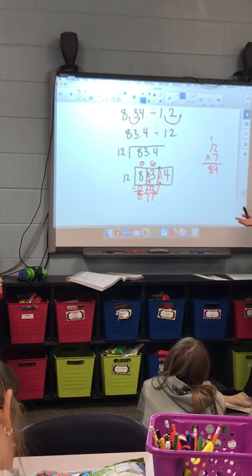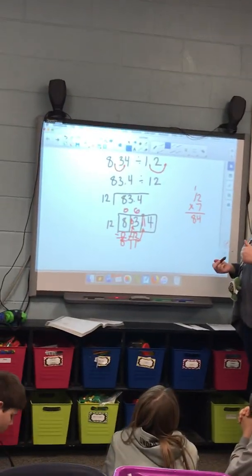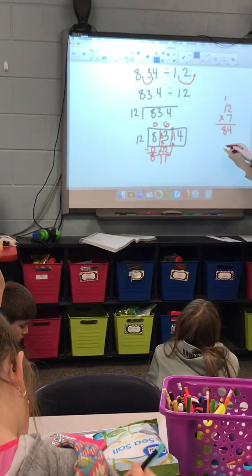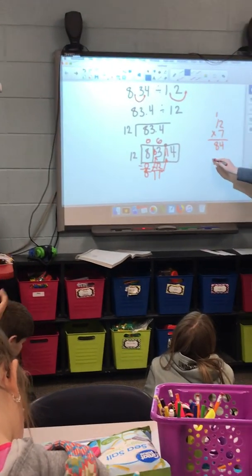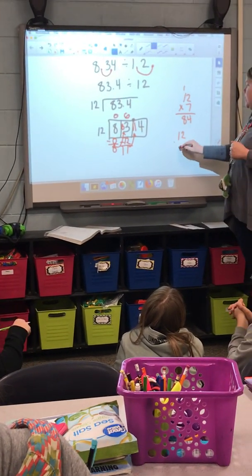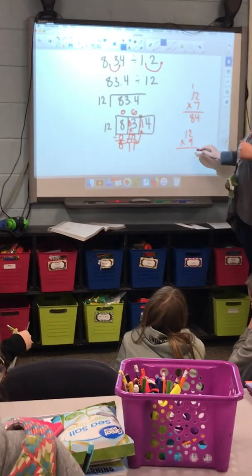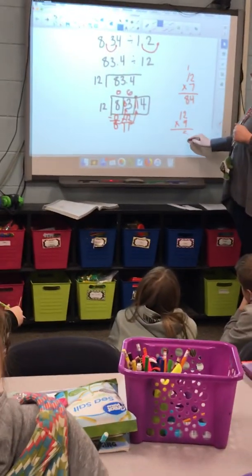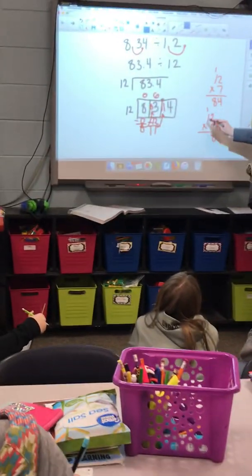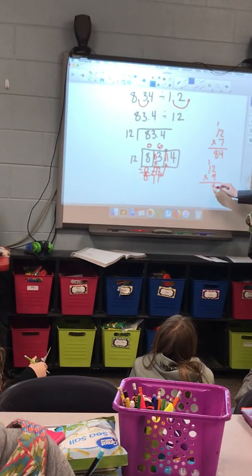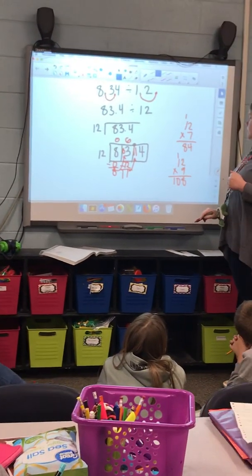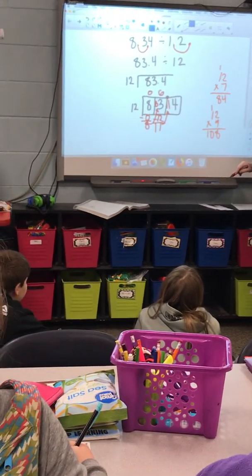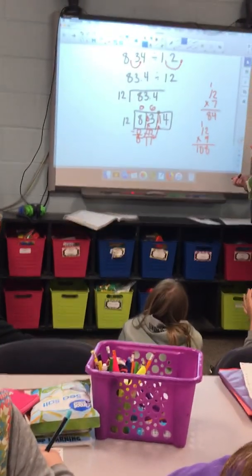Okay. How are we going to get close to one fourteen? Hmm? Well, let's try twelve times nine. Let's see. Nine times two is eighteen. Carry the one. Nine times one is nine. Plus one is ten. Okay. I think that is going to be the closest, right?